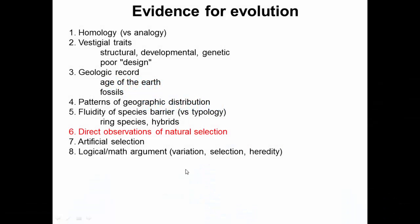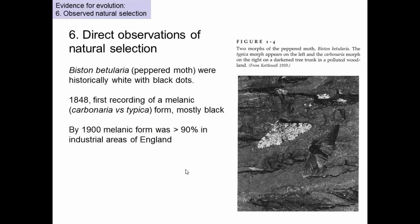Our sixth line of evidence for evolution comes from direct observations of natural selection. We'll look mainly at one example here — a really famous one. This is Biston betularia, the peppered moth.